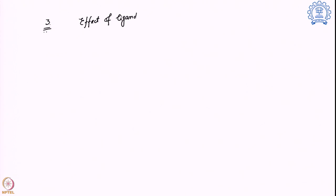With those things in mind, let us go ahead with some examples to follow what is actually happening with Mössbauer spectroscopy. We have already covered two examples, so this is example number three we are going to cover today: what is the effect of ligands on Mössbauer spectra?